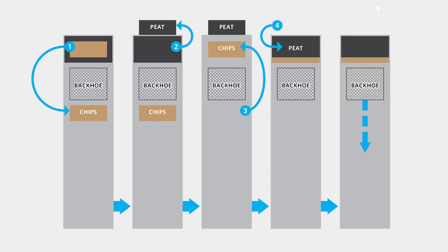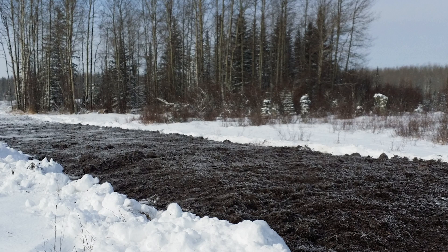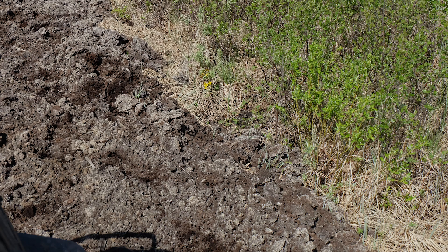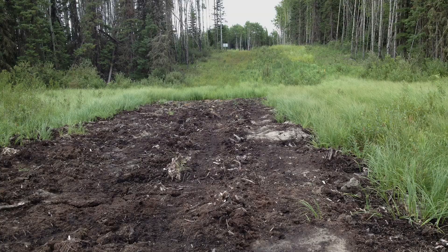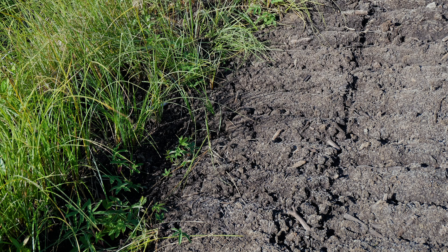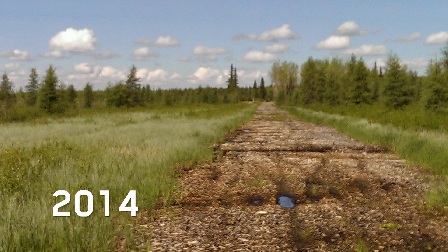Step five: lightly tap down and smooth the peat surface to remove air pockets. Leave the surface elevation roughly 10 centimeters higher than the surrounding area to account for settling. Step six (optional): the reclaimed peat surface did not settle as much as originally anticipated due to a drier than normal spring and summer in 2015. Backtracking was utilized in August 2015 to further lower the surface.